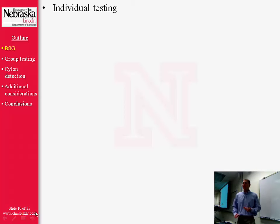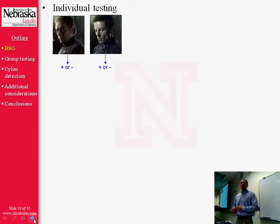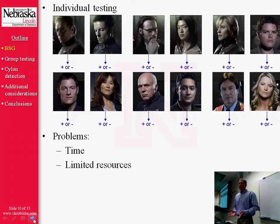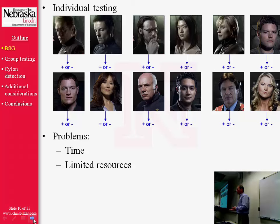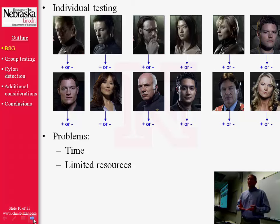How is Baltar planning on doing this testing? He's planning on using what you could call individual testing — testing Commander Adama's blood sample to get a positive or negative result, then testing Lee Adama, his son, and so on, getting positive or negative results for each person. There are obvious problems with this strategy: it's going to take a lot of time — 60.1534 years — and a lot of resources. They have very limited resources in the fleet because these people were fleeing for their lives and didn't have time to pack supplies. What Baltar needs is a way to determine human or Cylon for everyone using a small amount of time and resources.